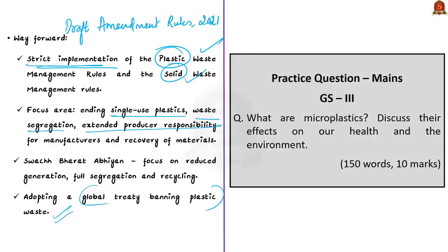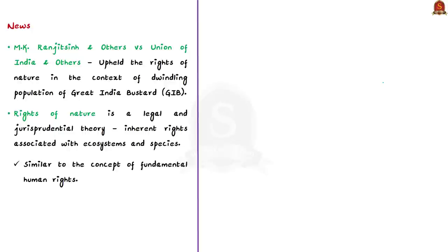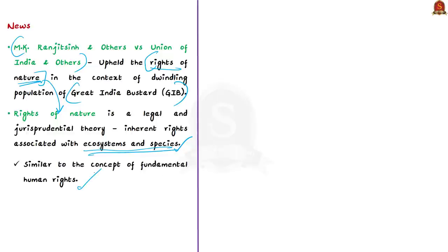Our second discussion is based on an editorial relevant to a recent Supreme Court judgment that upheld the rights of nature, given in the case M.K. Ranjit Singh and Others versus Union of India and Others. This case pertained to the dwindling population of the Great Indian Bustard. The rights of nature is a legal and jurisprudential theory that describes the inherent rights associated with ecosystems and species, similar to the concept of fundamental human rights.